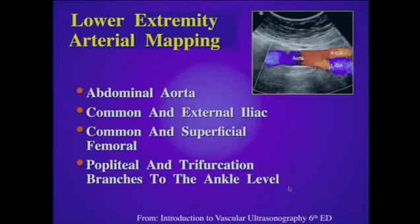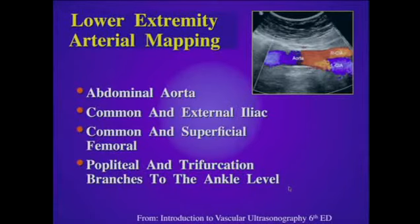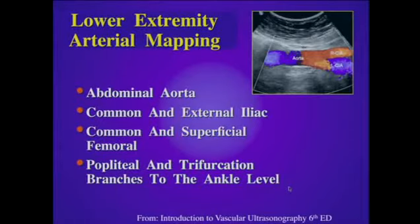Lower extremity arterial mapping is performed from the abdominal aorta, moving down the common and external iliac arteries, through the femoral bifurcation to include the superficial and deep femoral arteries, and through the lower extremity to evaluate the popliteal artery and trifurcation vessels to the level of the ankle.